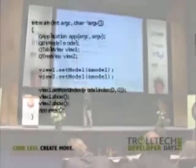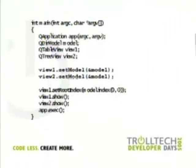Here's the first piece of code. You can also refer to your handouts. The point is just to show you how easy it is to share a model between views. Here we instantiate a directory model — a model that shows the file system — and we share it between two different views: a table view and a tree view. It's very easy to do, and the result looks something like this.